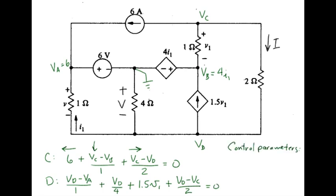Next we need to write our control parameters in terms of our assigned node voltages. The current I1 is VD minus VA over 1, and the voltage V1 is VC minus VB.